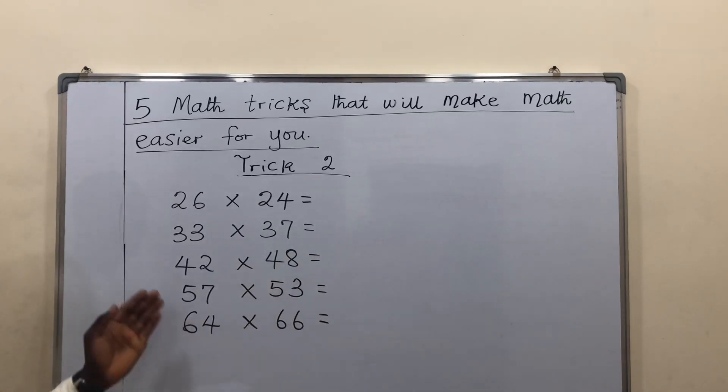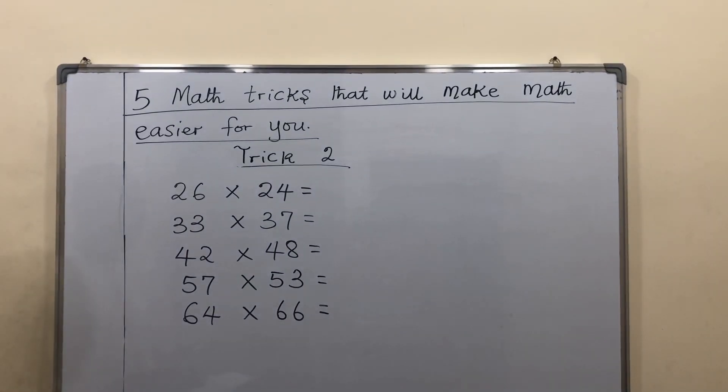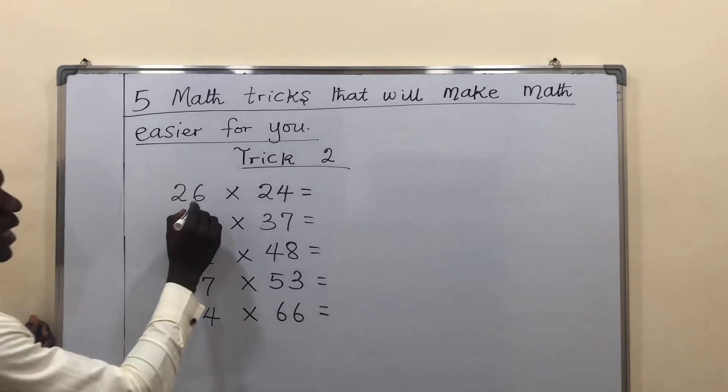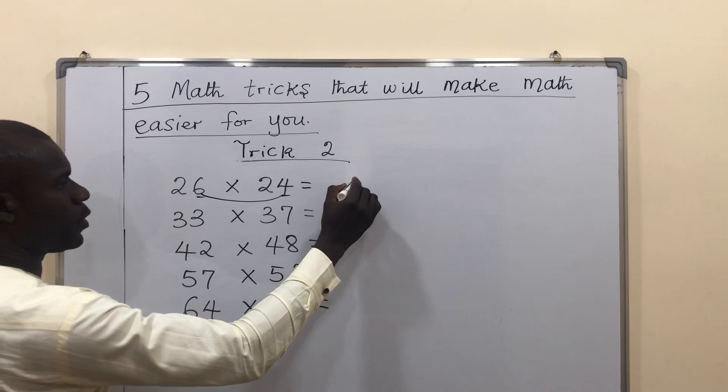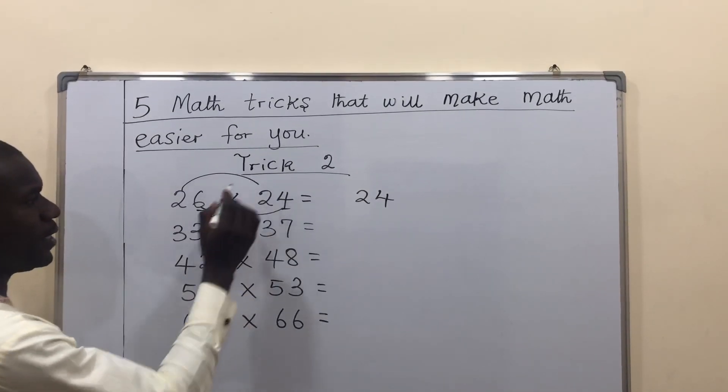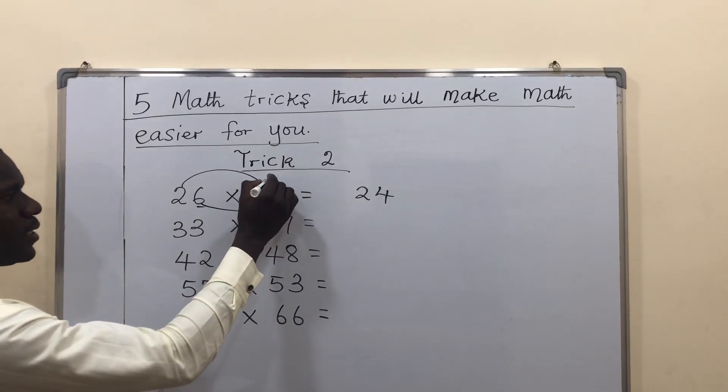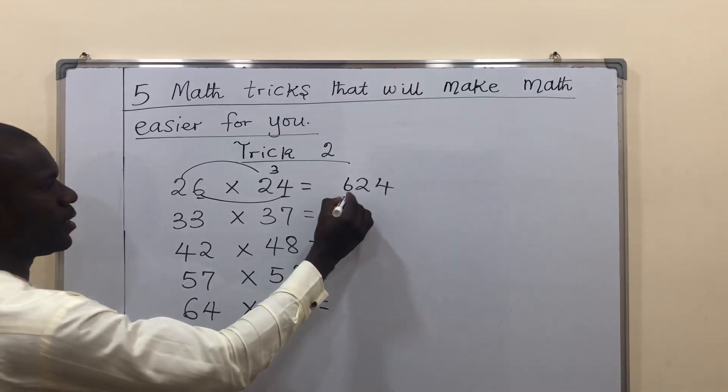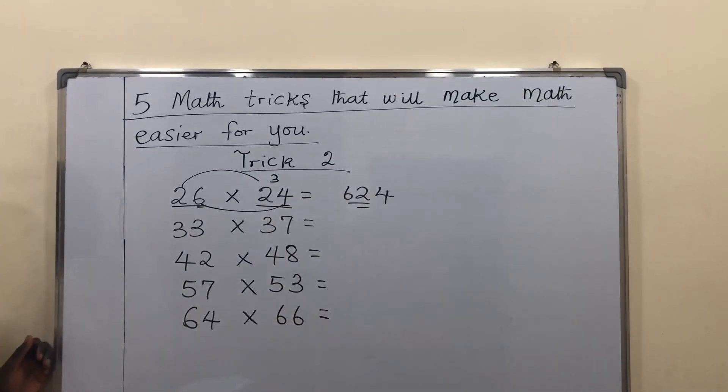Let's look at trick 2. This has to do with multiplication problems. Here is the trick here or the shortcut. Start by multiplying the units. 6 times 4 will give us 24. Then you go over and multiply the tens. After 2, what comes next? 3. 2 times 3 is 6. So, 26 times 24 will give me 624.